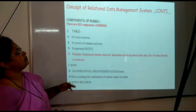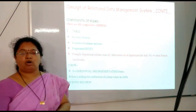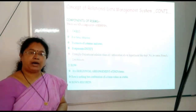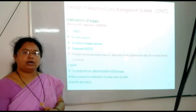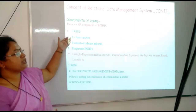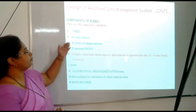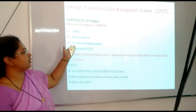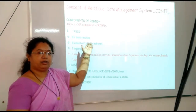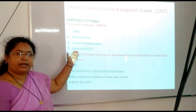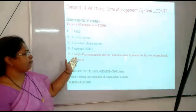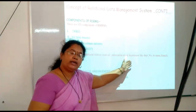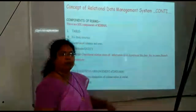The next point is the different components of a relational database management system. There are six components. Component means parts. By using these parts, we can store our data in a database management system. The first component is table. Table is a simple basic structure in which data is stored within the intersection of rows and columns, and the table represents an entity. For example, we have a department table, in which we store all information related only to the department, such as department number and department name.